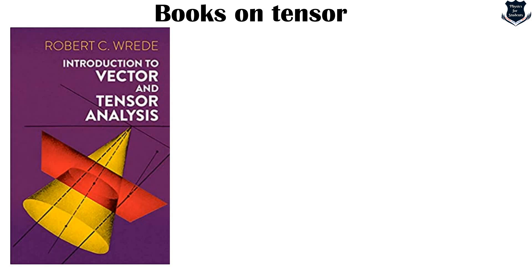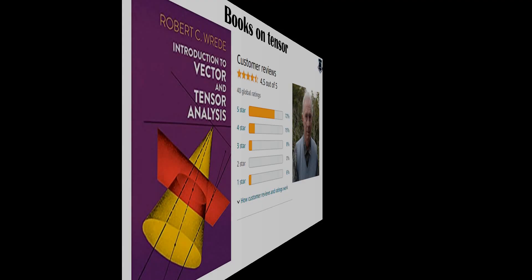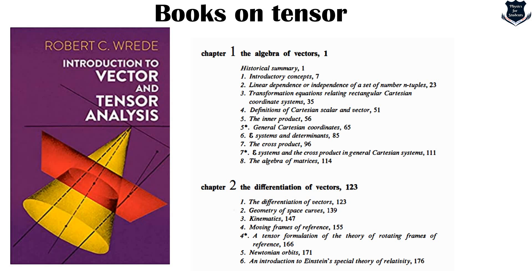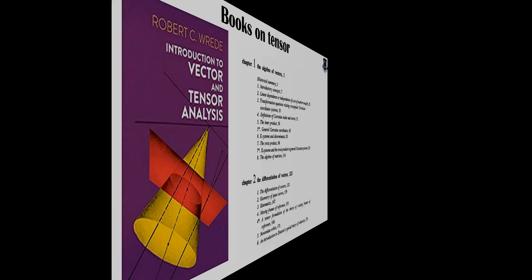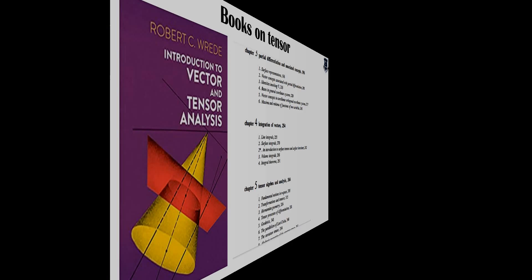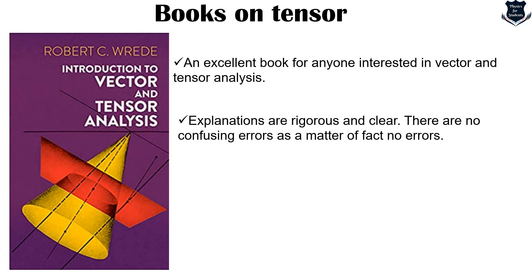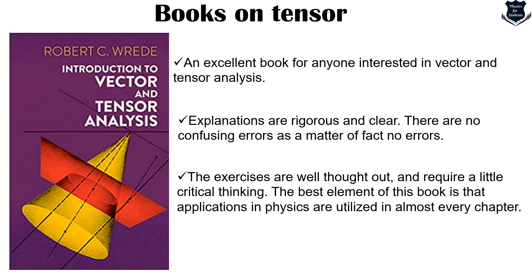The last book is Robert C. Wrede's Introduction to Vectors and Tensors, given a 5-star / 72% rating. The beauty of this book is that it starts with a historical summary, linear dependence, then moves into inner product, differentiation of vectors, introduction to Einstein's special theory of relativity, partial differentiation, line integrals, fundamental notions in space, geodesics, Levi-Civita connection, and curvature tensors. It covers a lot of physics as well as vectors and tensors. Explanations are rigorous with no errors — unlike some textbooks that contain errors. The exercises are very well thought out, and the best element is that applications in physics are demonstrated in every chapter.